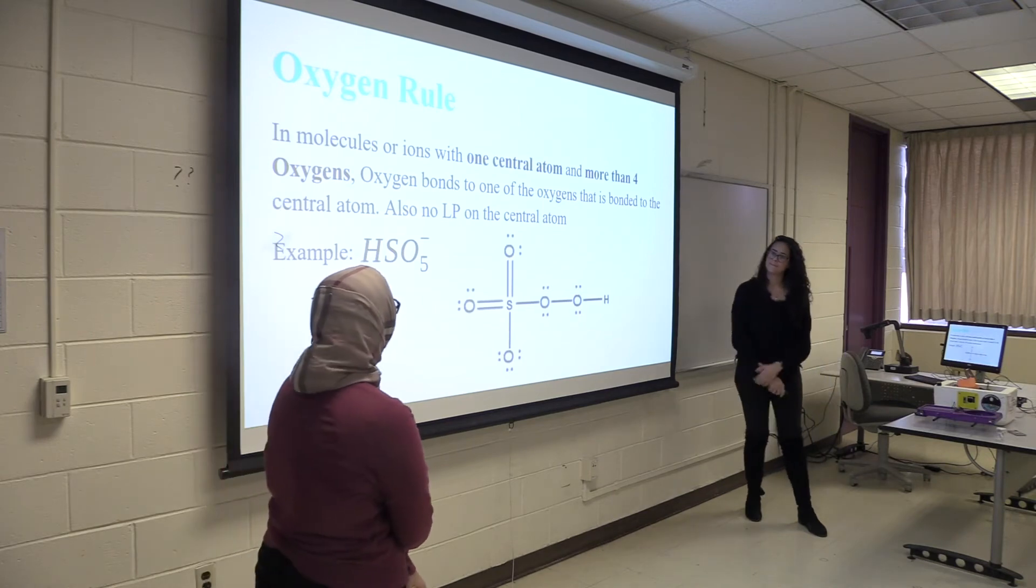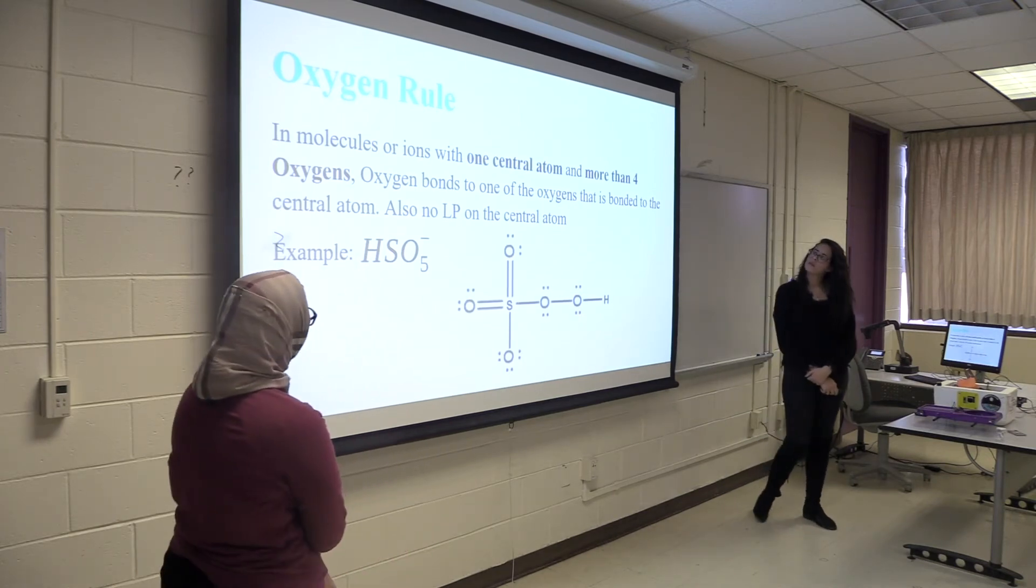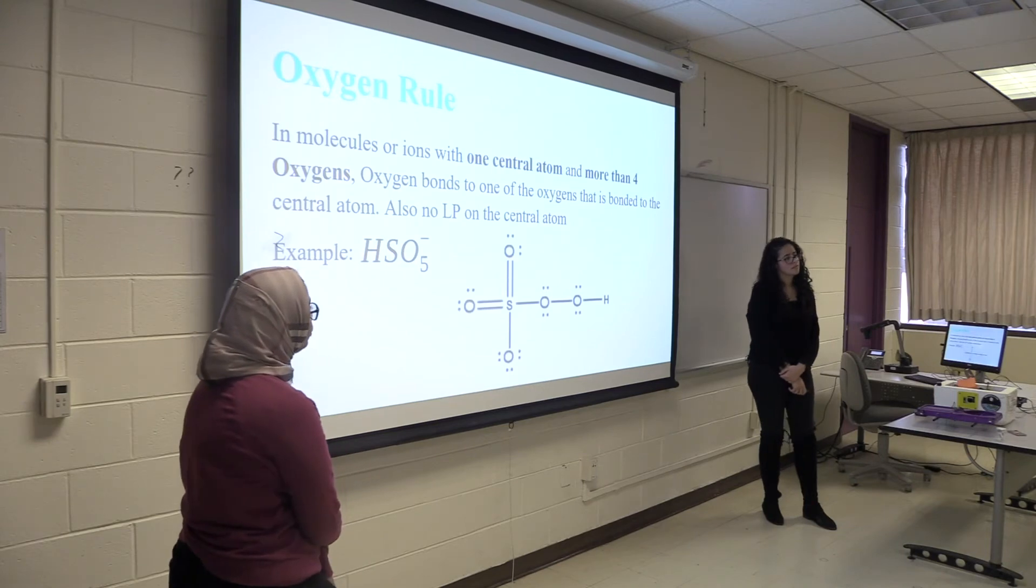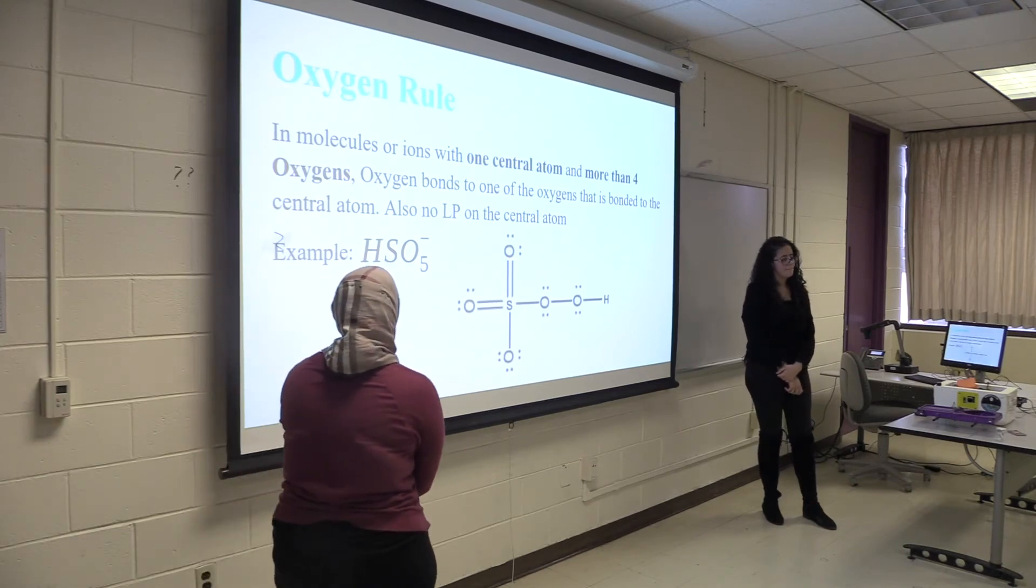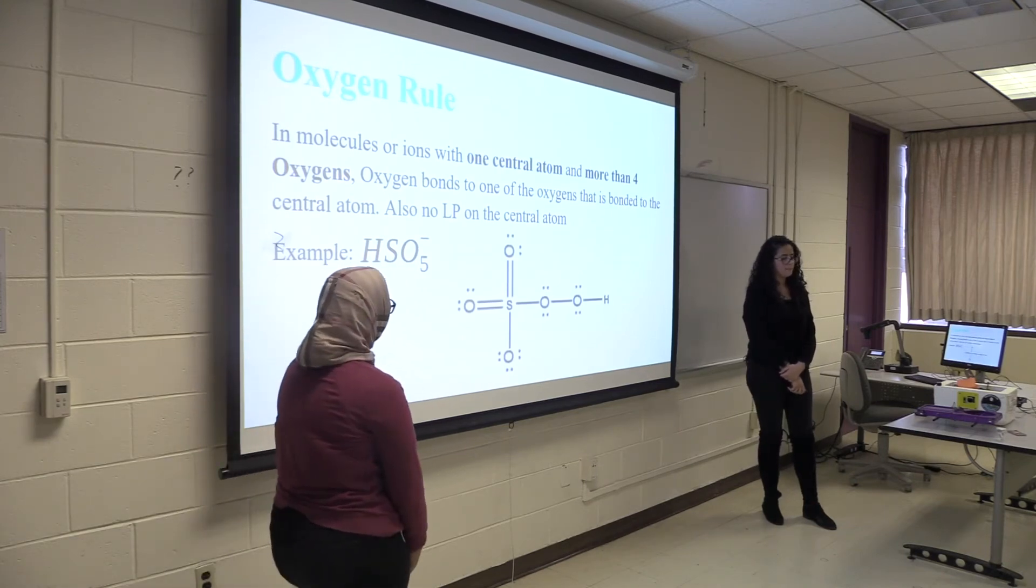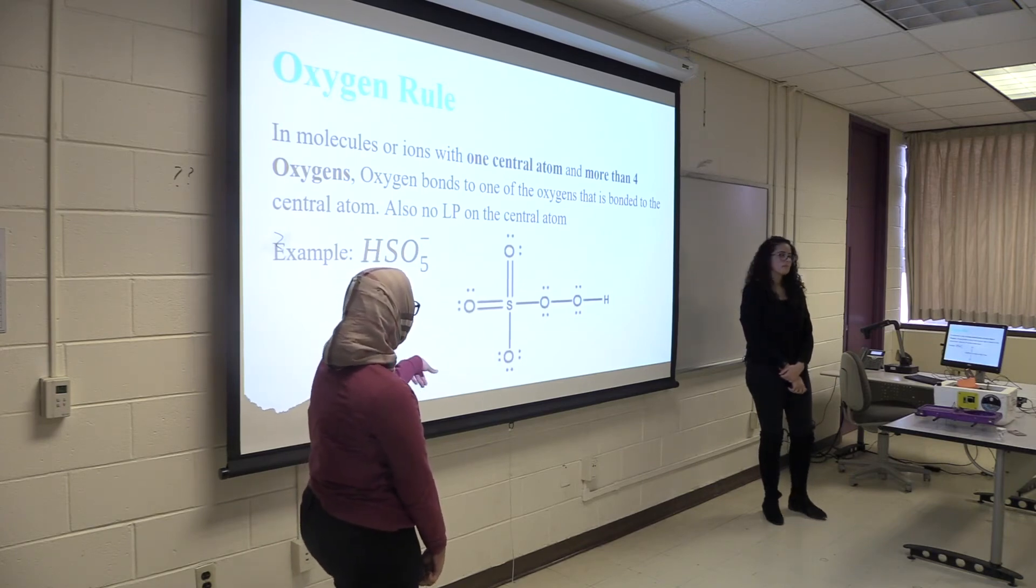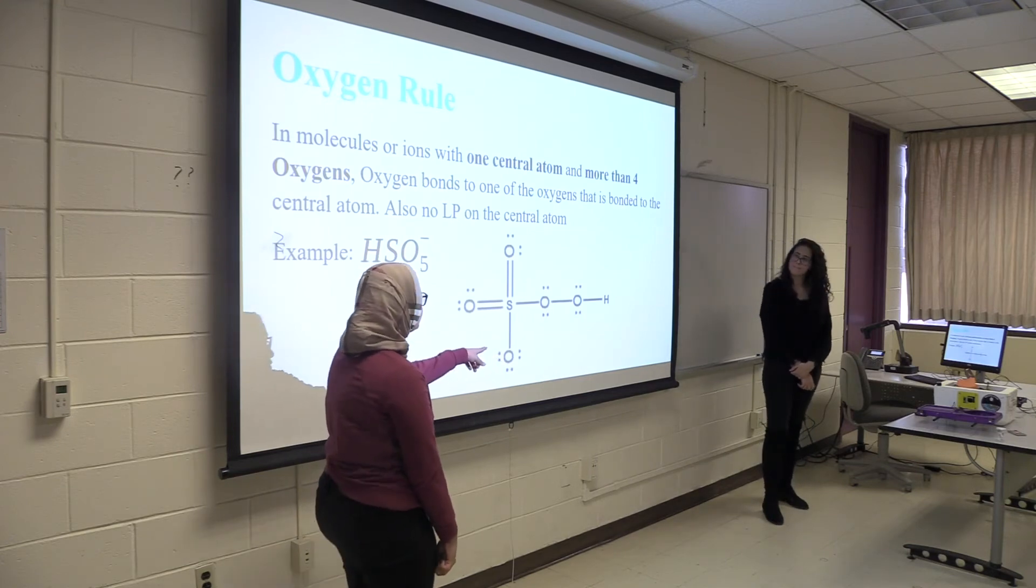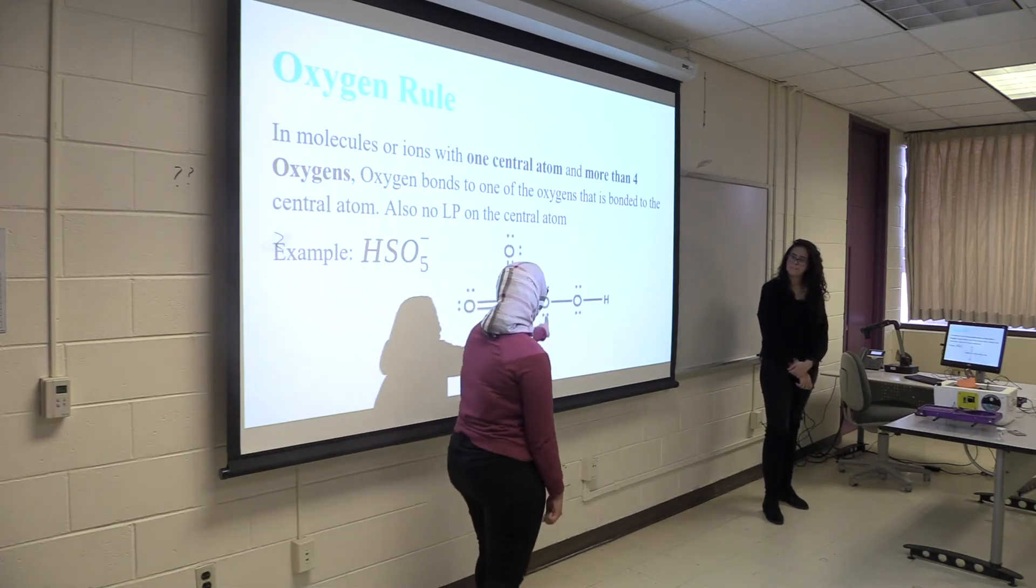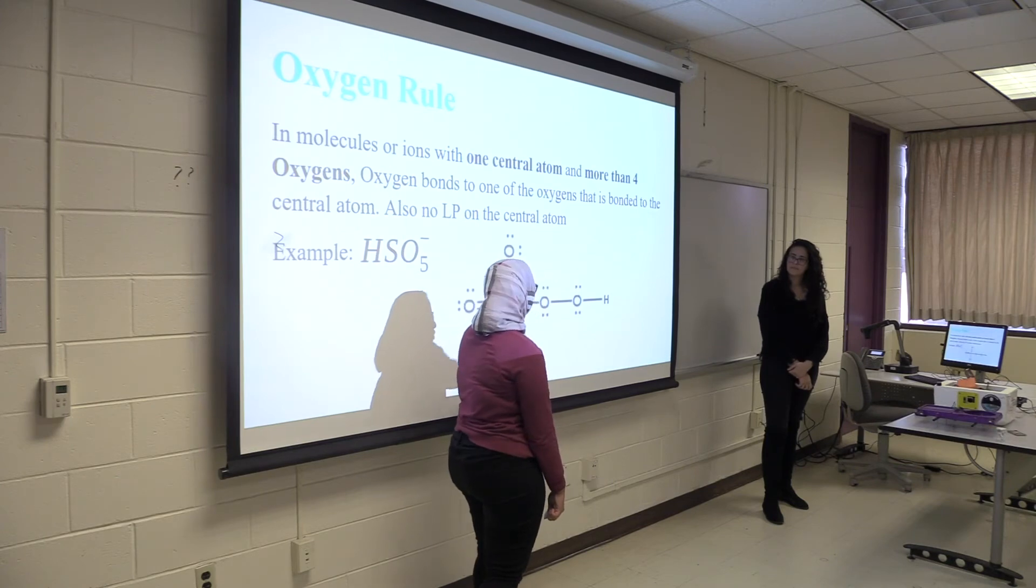So this is the oxygen rule for molecules and ions with one central atom. So if you have more than four oxygen, like in this example, one of the oxygen bonds to another oxygen that's bonded to the central atom. So in this example, the fifth oxygen is bonded to the oxygen that's bonded to the central atom.